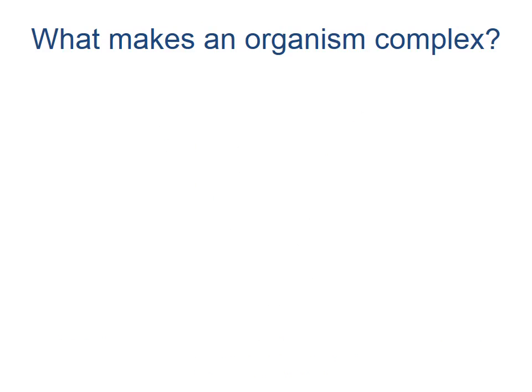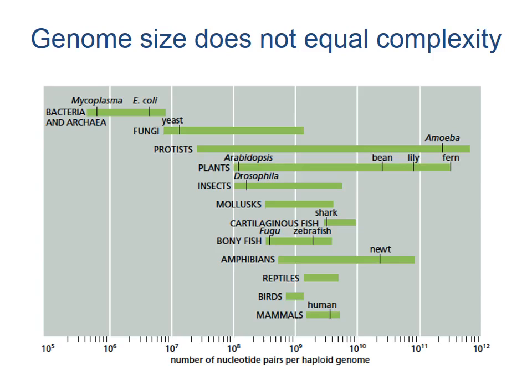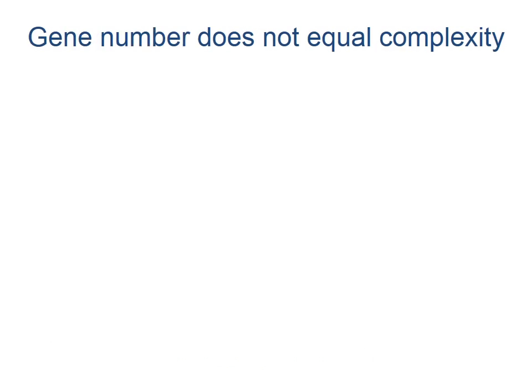With all these different examples of life, we can now ask what makes an organism complex? We find that genome size does not always equal complexity. In fact, certain amoeba, which are morphologically simple, tend to have huge genomes. Gene number also does not equal complexity.